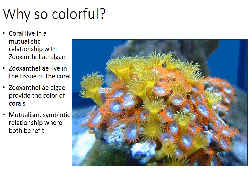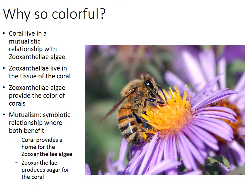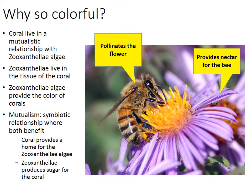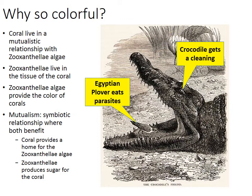This is a great example of a mutualistic relationship — a symbiotic relationship where both organisms benefit by living off of one another. The coral provides a home for the zoanthellae algae, and the zoanthellae algae, being photosynthetic, takes in sunlight, water, and carbon dioxide and produces glucose. That glucose is the primary source of food for the coral. Another common example of mutualism is between a bumblebee and a flower — the bee pollinates the flower and the flower provides nectar. A fun example is the Egyptian plover bird and a crocodile: the bird eats parasites from the crocodile's mouth, and the crocodile gets a cleaning. They both benefit.